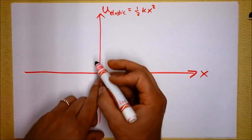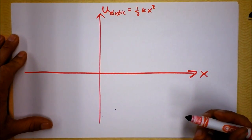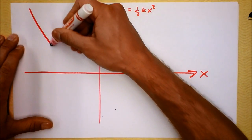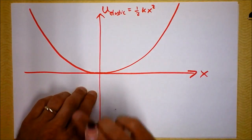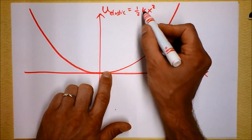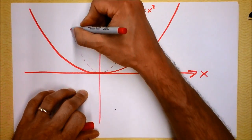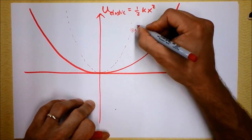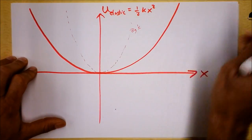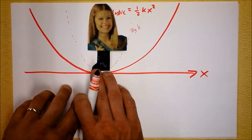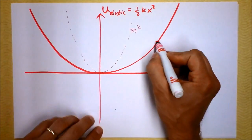Her elastic potential energy is one-half K times X squared. This is a parabola — it's symmetric and quadratic, not exponential, it goes like X squared. If K were bigger, the graph would be steeper. If K were smaller, the graph would be spread further out. This is the graph I want to consider — the bold one — so let's give the skater some energy and pull her out to a starting position and let go.